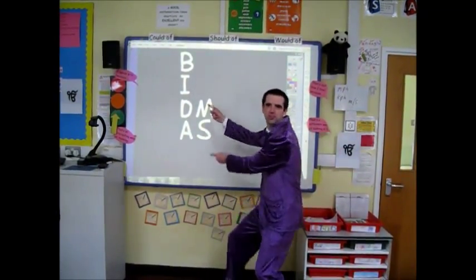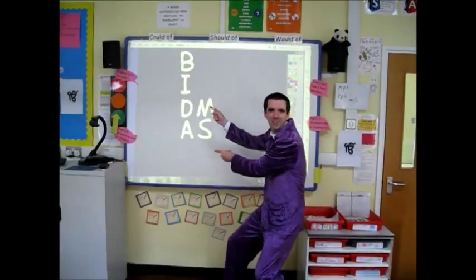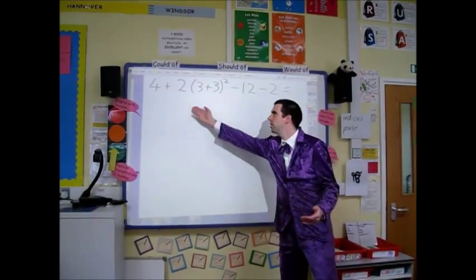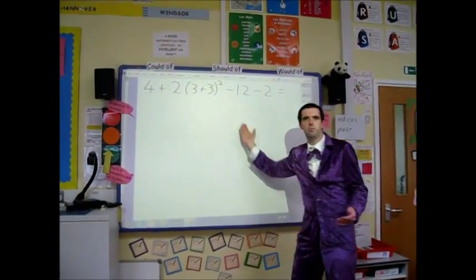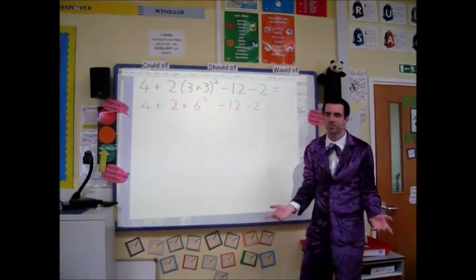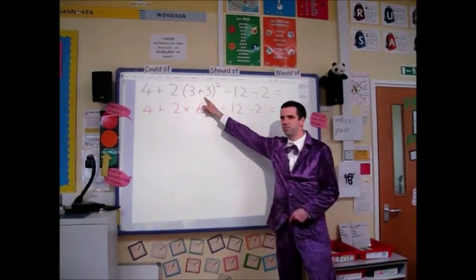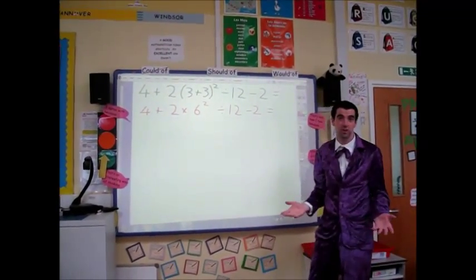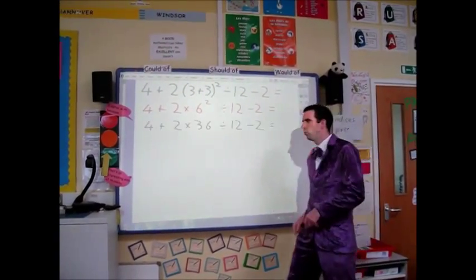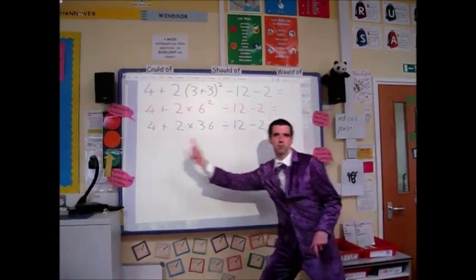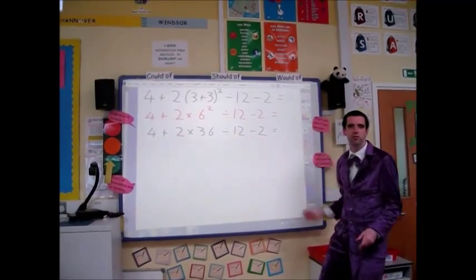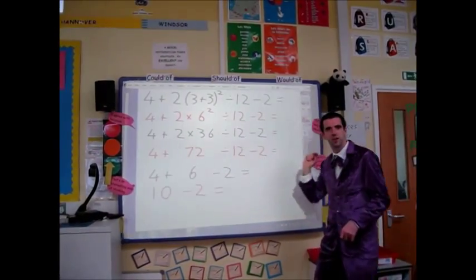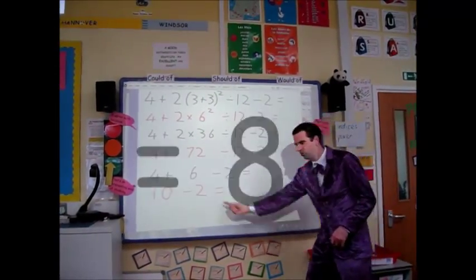You should use BIDMAS. First: three plus three in the brackets. Now the indices — six squared is thirty-six. Now we work from left to right: two times thirty-six, then divide. Four plus six and then take away two.